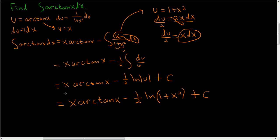So the final answer is x arctan x minus 1 half times the natural log of the quantity 1 plus x squared, all plus our arbitrary constant.